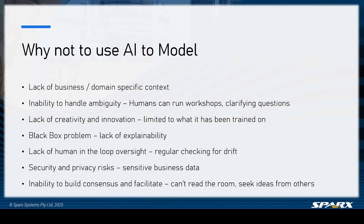The AI also has a hard time reaching consensus to facilitate a true picture of a story. It can't read the room, it can't seek ideas from others, and it can't ensure that all stakeholders are happy and on the same page — especially when people respond with facial expressions and other quirks that the AI is simply not going to see.